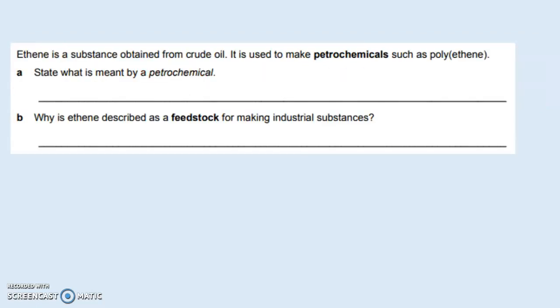Ethene is a substance obtained from crude oil. It is used to make petrochemicals such as polyethene. State what is meant by a petrochemical. Petrochemical industry is whereby you are obtaining substances from crude oil. Anything that comes from crude oil falls under petrochemicals. Why is ethene described as a feedstock for making industrial substances? Ethene is a very important feedstock and feedstock means it's a raw material. From ethene you can get many different useful compounds and the most commonly used one is polyethene.